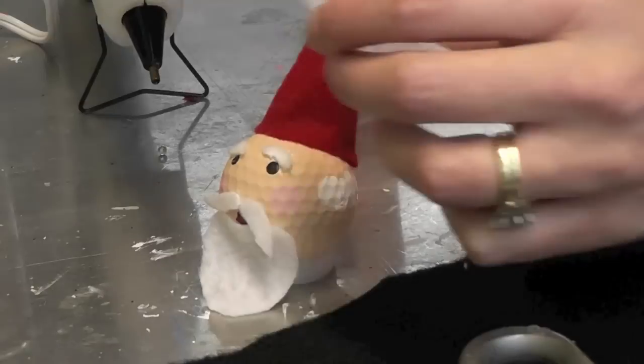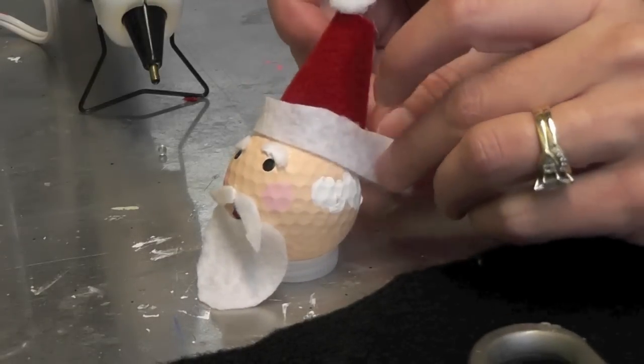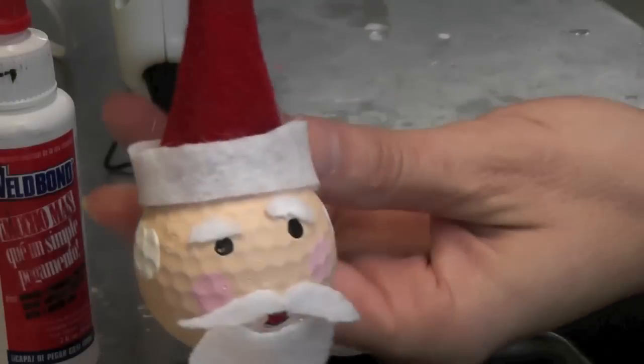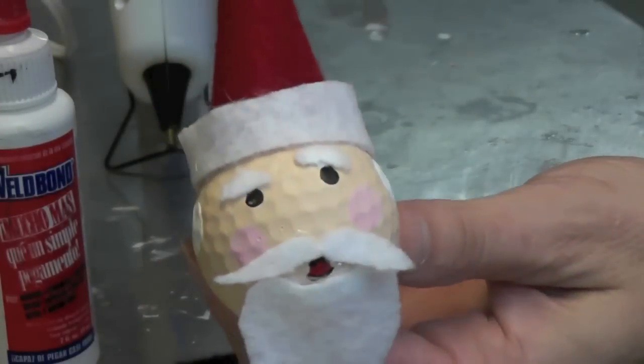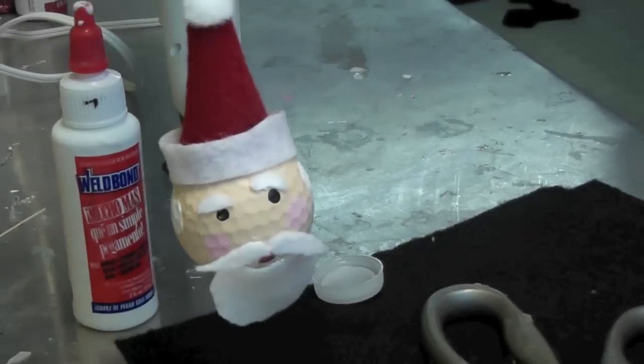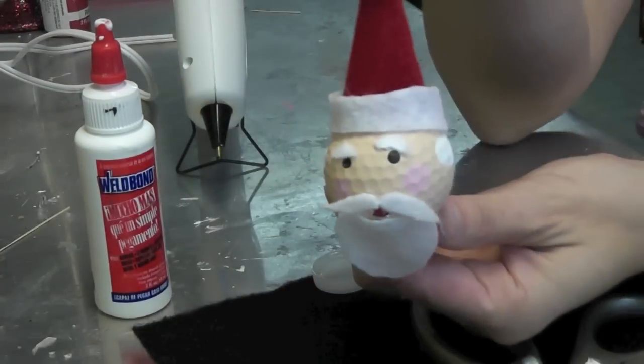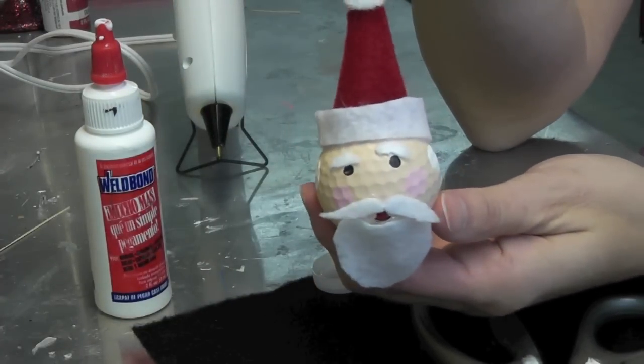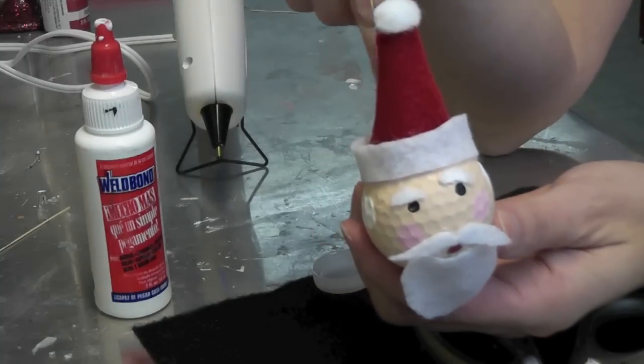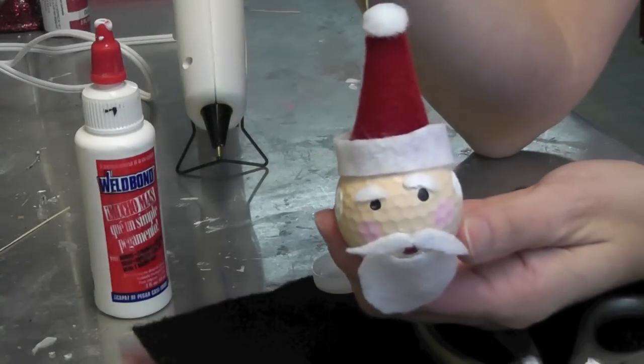Then I have some felt for the trim of the hat, which this I'll just do with the hot glue where it meets. And there you have Santa ready to hang on your tree. So this is a great little gift just to make to hang on the tree, or if somebody is big on golf you can do that. You can always put a little glitter or trim around it as well to dress it up if you want.